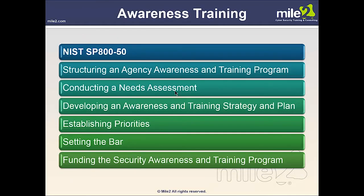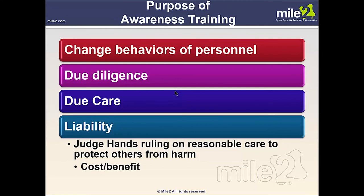Awareness training: NIST Special Publication 800-50, Building an Information Technology Security Awareness and Training Program, provides guidance for building an effective IT security awareness program supporting requirements specified by FISMA and OMB Circular. We must structure an agency awareness and training program by assessing organizational needs, developing an awareness and training strategy and plan, setting priorities, and funding the program. The purpose of awareness training is to change the behaviors of personnel — we want to act responsibly, exercising due diligence and due care.